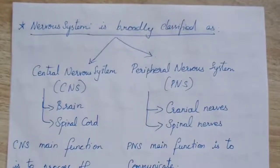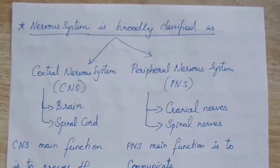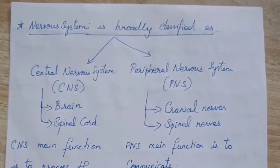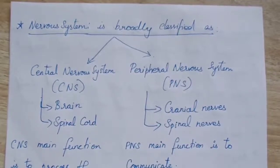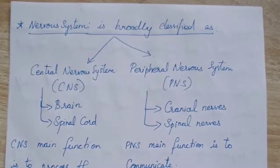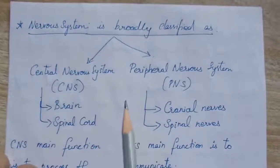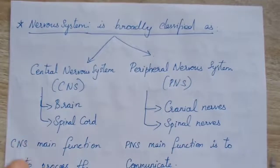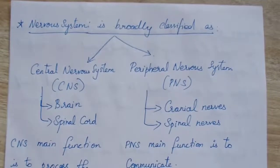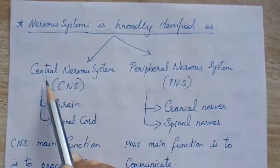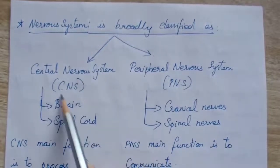In the last class we saw the structure of the neuron. Today we'll see the classification of the nervous system and reflex action. The nervous system controls and coordinates every action in our body. It is broadly classified as the Central Nervous System, called CNS, and the Peripheral Nervous System, called PNS.